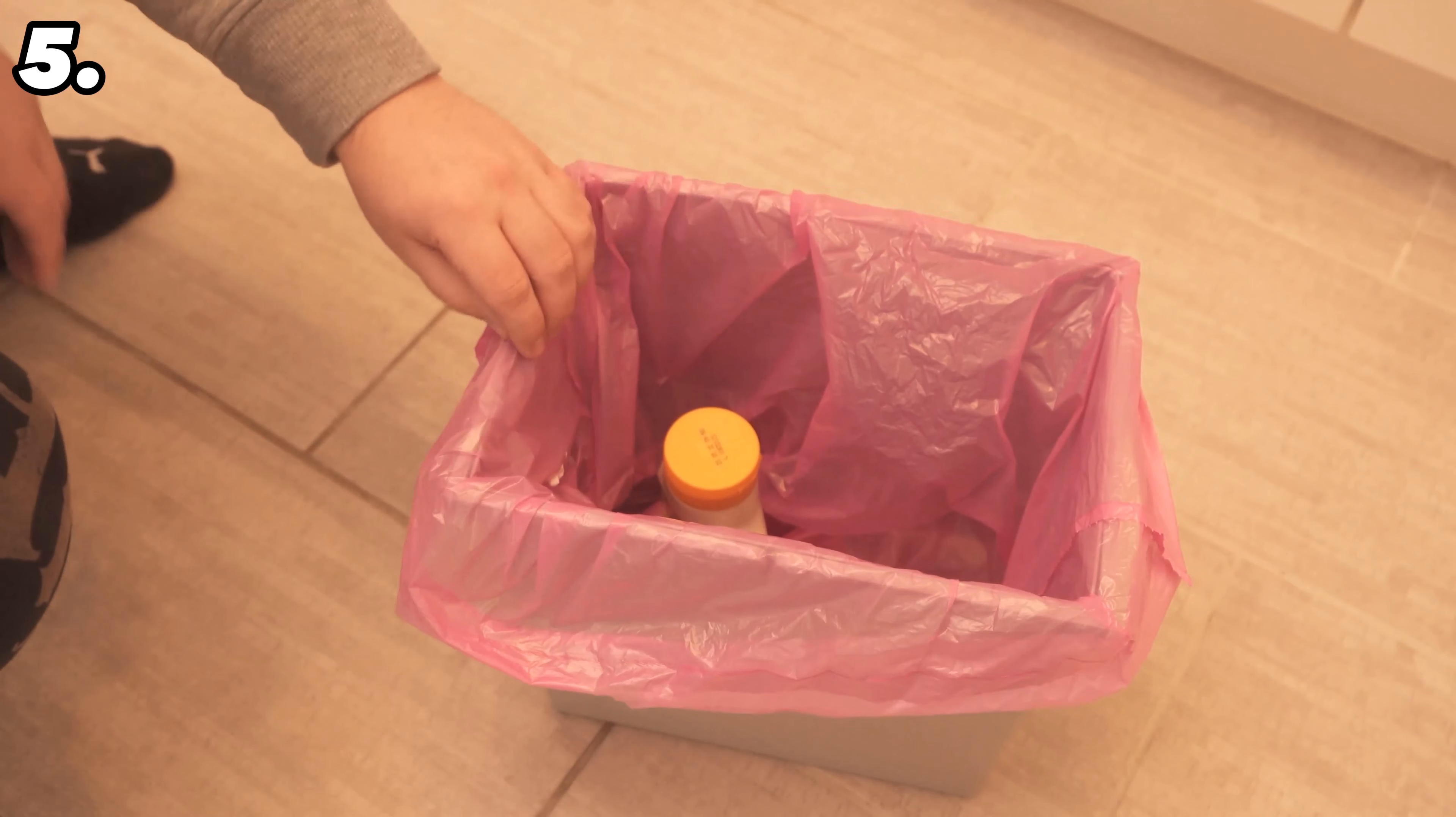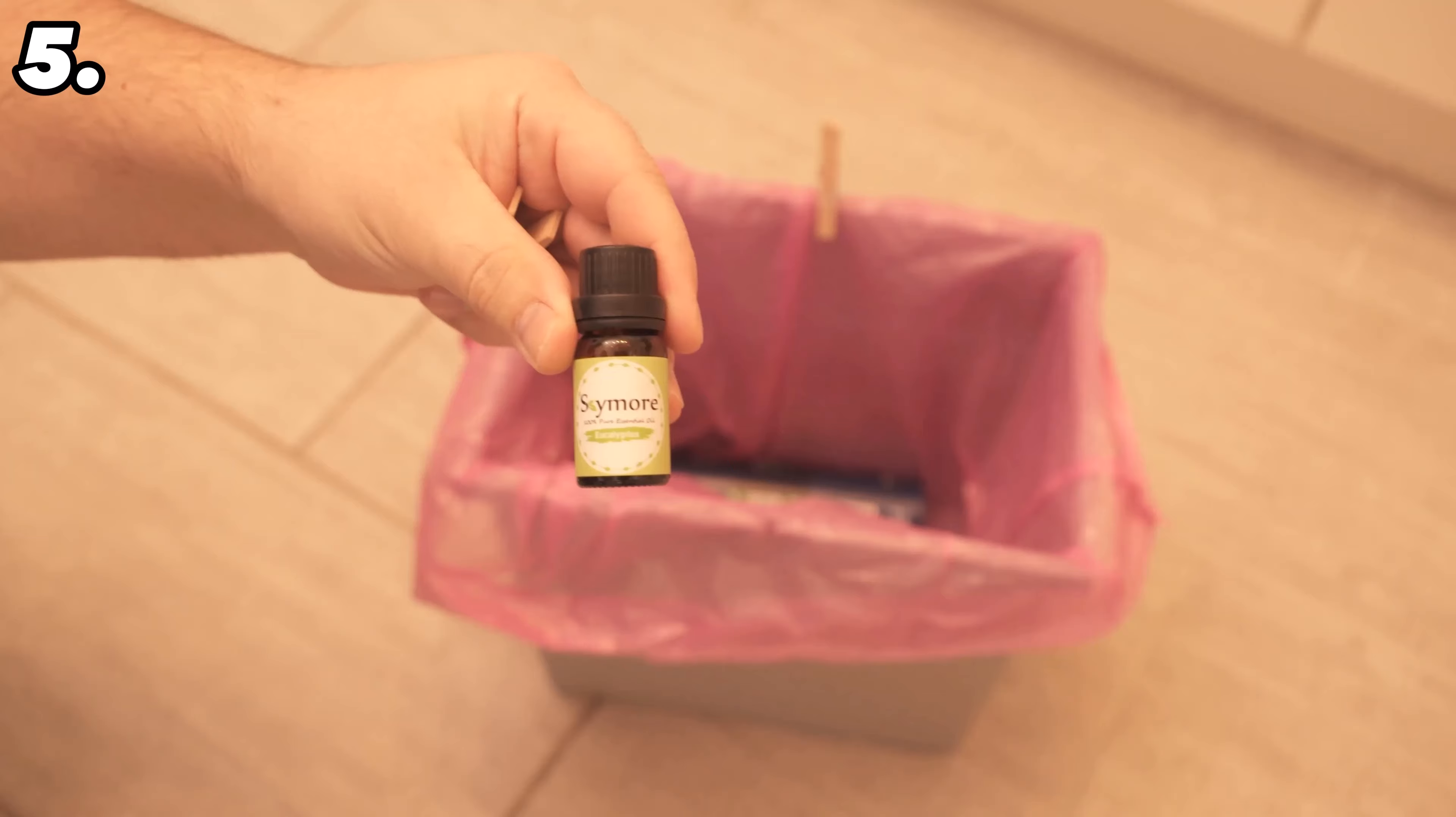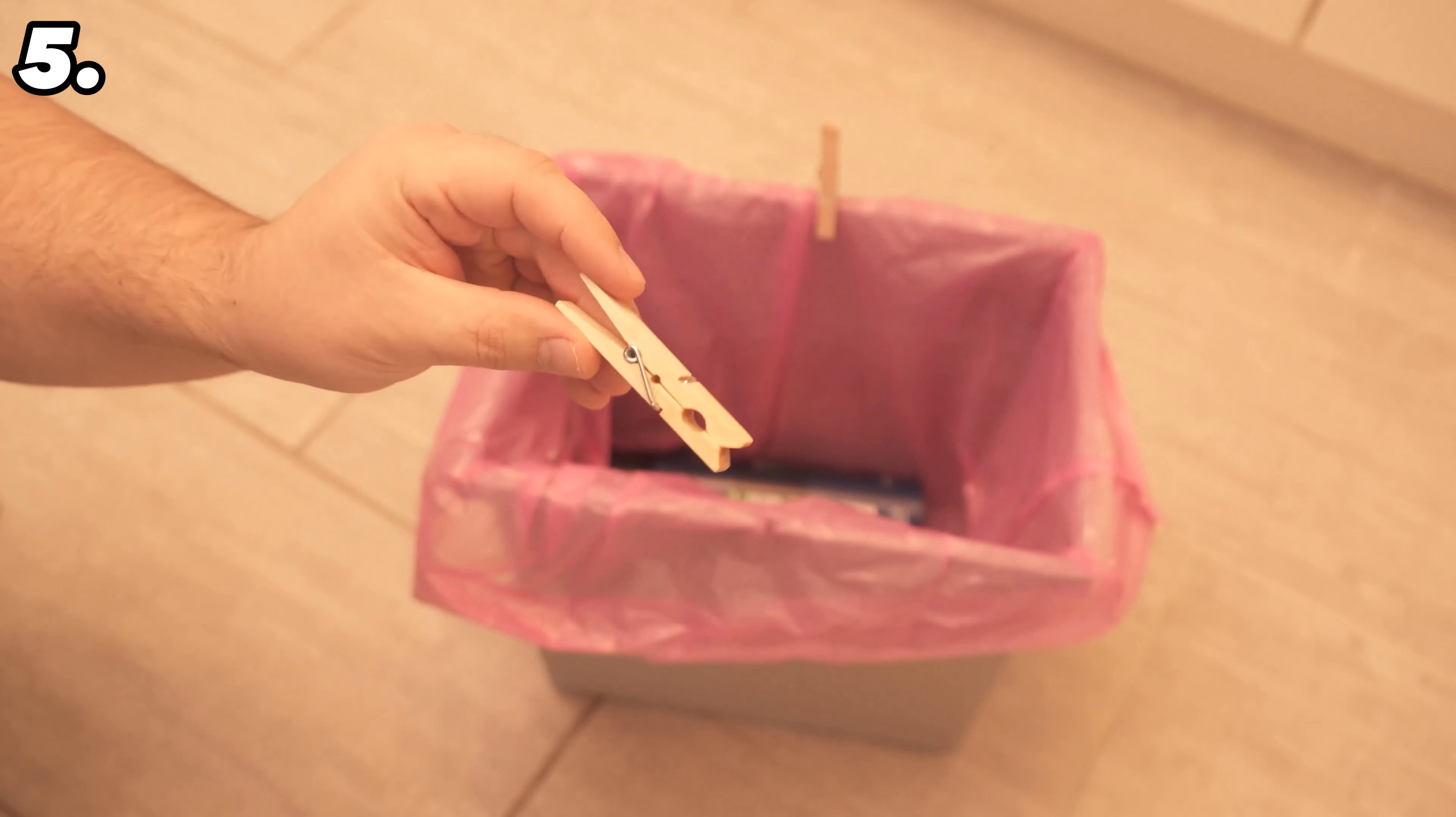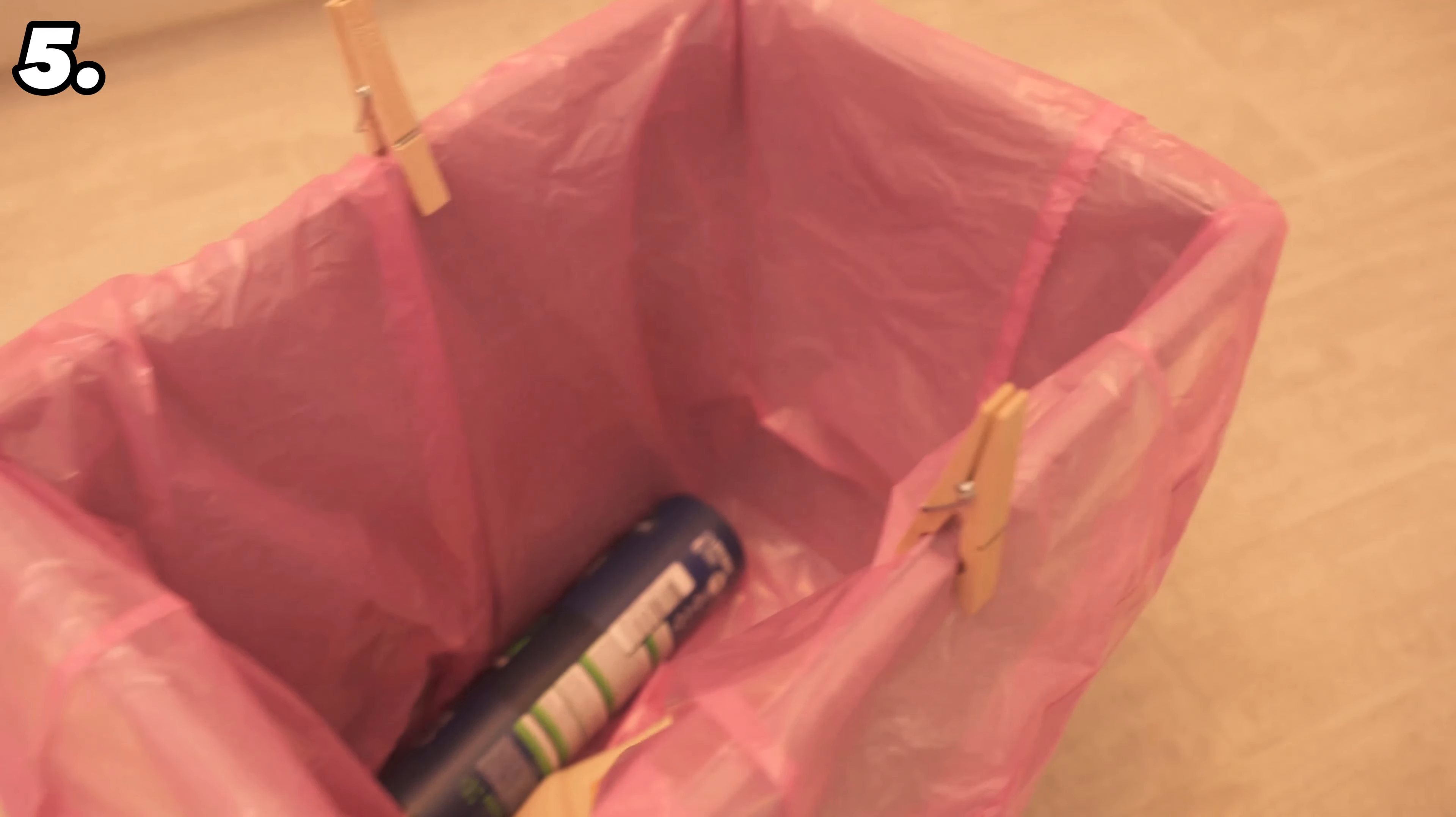If you pull the bin liner over the bin and then use two clothespins to secure the bin liner on two opposite sides, it should no longer slide back and forth. The bag will no longer slide in but will stay in place. Here's a bonus trick: if you use a wooden clothespin, you can apply a little essential oil to it. Now you have two advantages. The bin liner should no longer slip, and you'll also create a really pleasant smell as it can often stink in the bin.